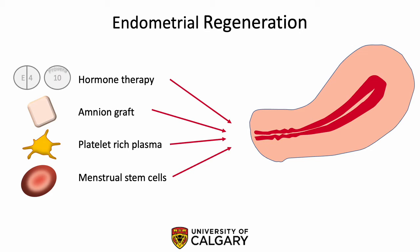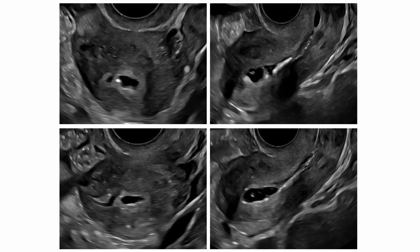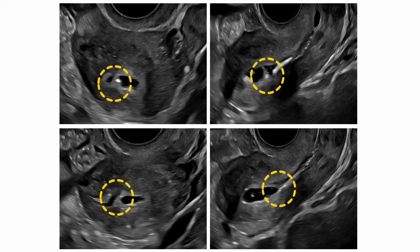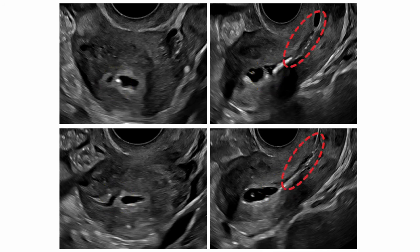Both platelet-rich plasma and menstrual stem cells have promising results in recent small randomized trials, though these products are still experimental. In our experience, endometrial regeneration is cumulative and progressive over the course of multiple procedures. In patients who are planning pregnancy, sonohistograms are routinely arranged one to four months following their initial procedure. Shown here is a repeat sonohistogram for our patient. Shown in yellow is an area of persistent adhesion near the fundus. Shown in red, although less obvious, is limited cavity distension, which suggests persistent adhesions in the lower uterine segment.